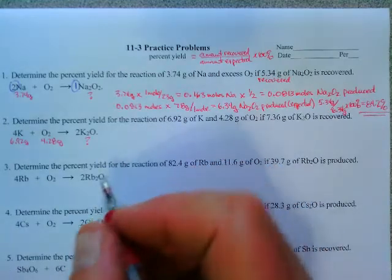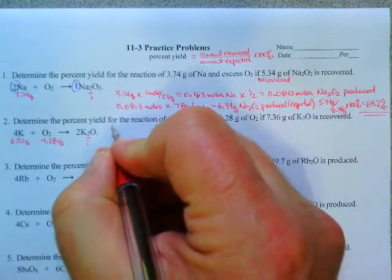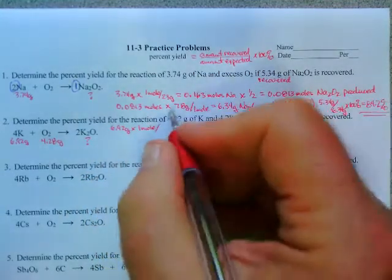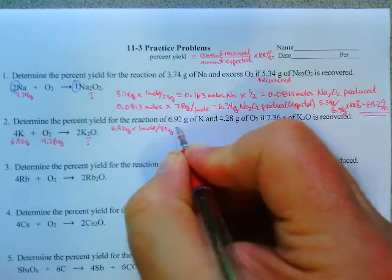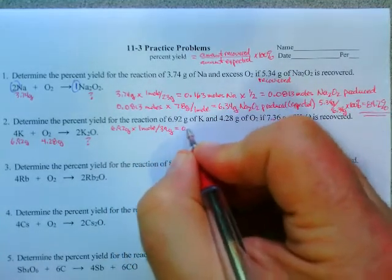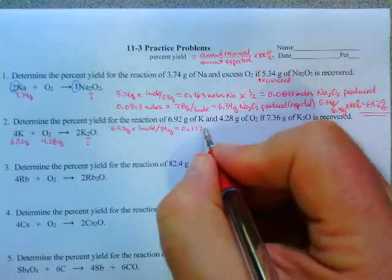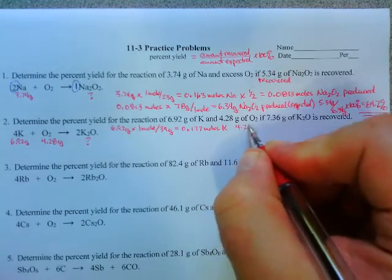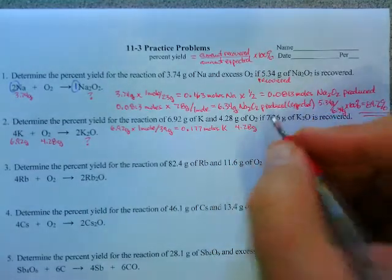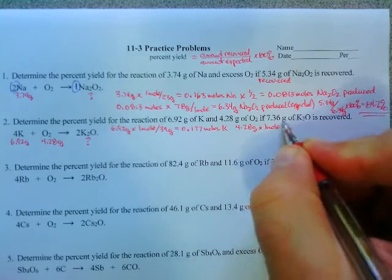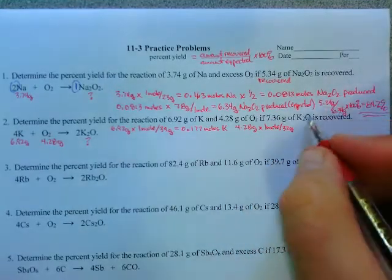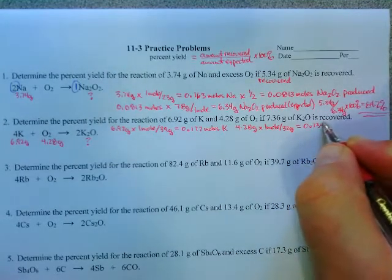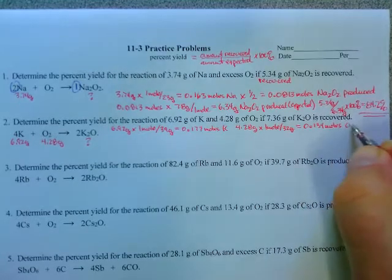So first put them both into moles. 6.92 grams times one mole over 39 grams gives me 0.177 moles of potassium. 4.28 grams times one mole over 32 grams gives me 0.134 moles of O2.